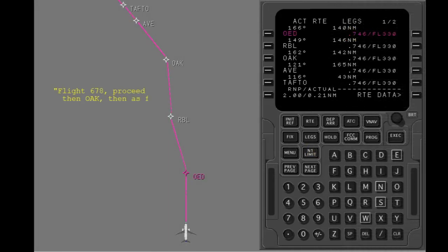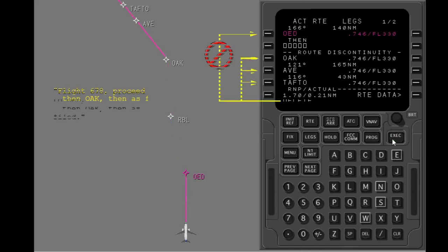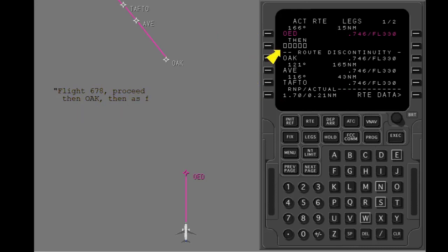To obey this clearance, you must delete Red Bluff from the route. Use the Delete key to delete Red Bluff. Execute the modification. All waypoints except the active waypoint can be deleted with the Delete key. A route discontinuity shows where the waypoint was deleted. A route discontinuity is two route segments that are not connected.